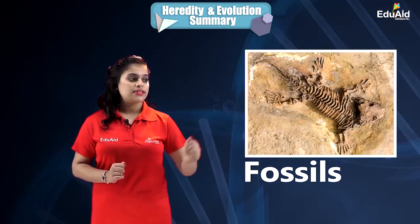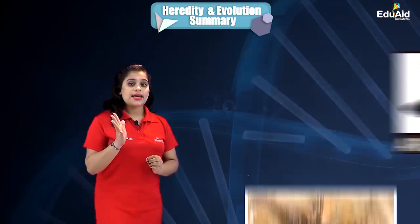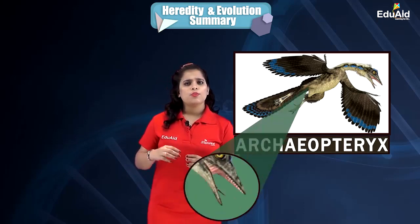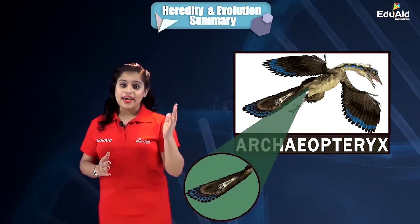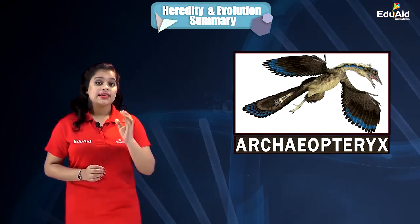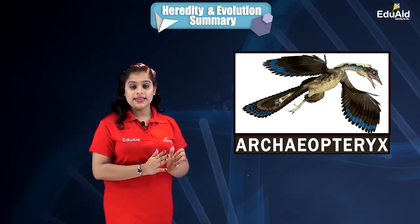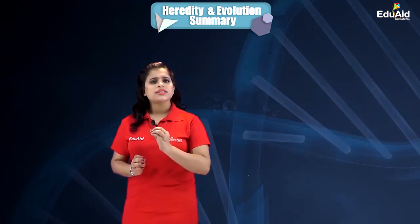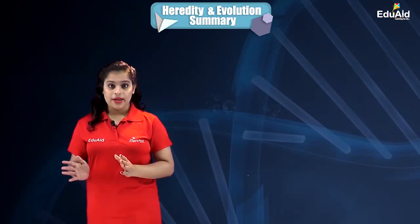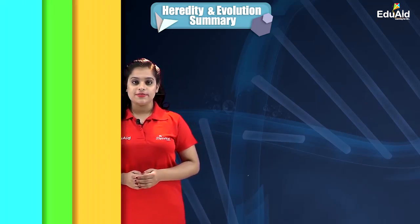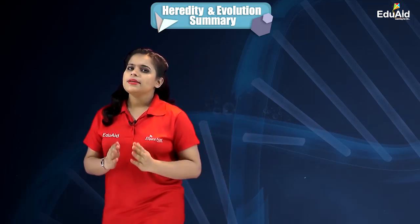The third source of evidence for evolution was fossils. We considered the example of Archaeopteryx, in which both reptilian and avian traits were present, suggesting it is a connecting link between reptiles and birds — indicating that birds must have evolved from reptiles. This is how fossils also provide evidence for evolution.